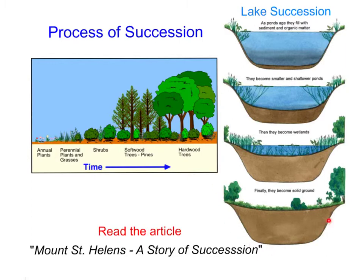There's also a very distinct process that occurs with lake succession. Ponds and lakes definitely go through succession where sediment and organic matter accumulate at the bottom. Eventually the pond becomes shallower and shallower until it becomes a wetland area, and finally solid ground where different plants and other organisms can grow.